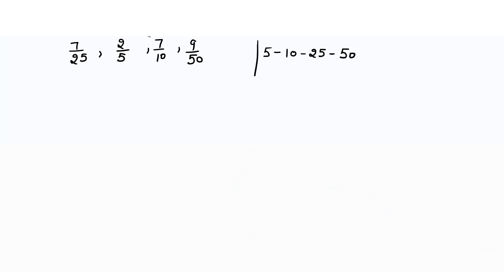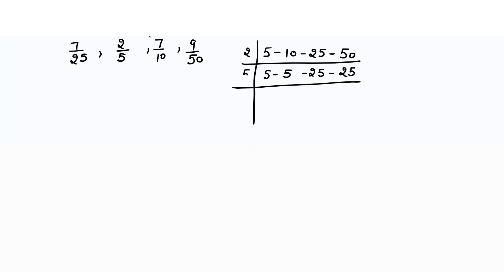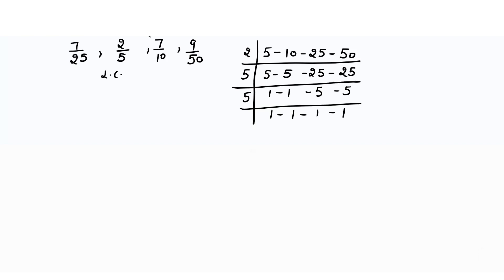Dividing by 2: 5 stays 5, 10 ÷ 2 = 5, 25 stays 25, 50 ÷ 2 = 25. Then dividing by 5 twice gets all values to 1. So the LCM is 2 × 5 × 5 = 50. We need to make all denominators equal to 50.